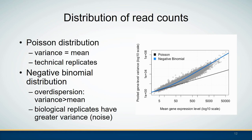While read counts from the same library preparation — technical replicates — can be well approximated by the Poisson distribution, it has been shown that biological replicates have greater variance than expected. This over-dispersion phenomenon can be captured with the negative binomial distribution, which is a more general form of the Poisson distribution that allows the variance to exceed the mean.